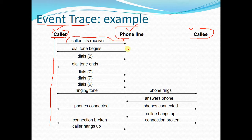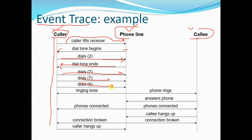The phone line responds and the dial tone begins. Then the caller dials the number, and as soon as the caller starts dialing, the dial tone ends. The caller keeps dialing, and finally when the number is fully dialed, the phone of the callee rings and the caller hears the ringing tone.